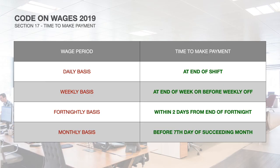Section 17 of the Code deals with time to make payment. This section explains when the wage is payable by the employer to the employee, and is based on the wage period. In cases where the wage period is fixed on a daily basis, the wages are to be paid at the end of the shift. In cases where the wage period is fixed on a weekly basis, the wages are to be paid at the end of the week and in any case before the weekly holiday.